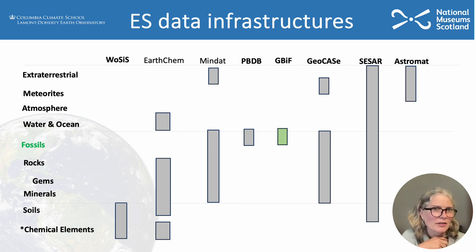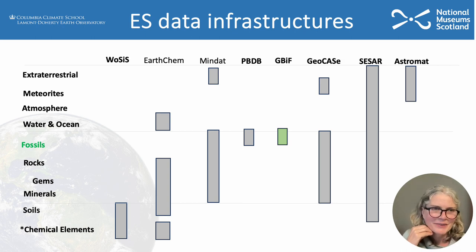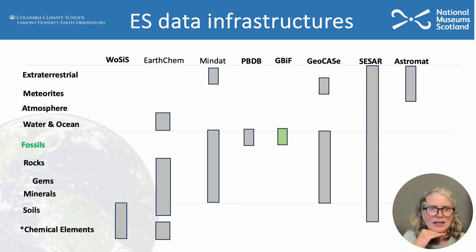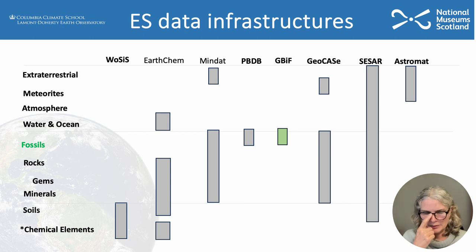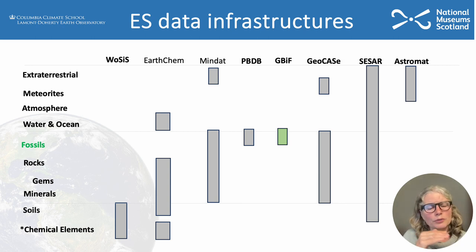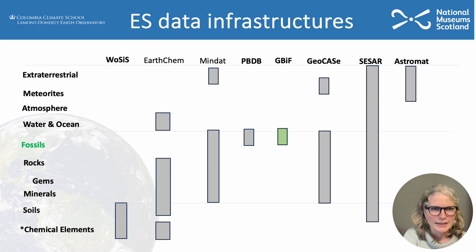I show here a range of data infrastructures along the top. In bold are data infrastructures that have specimens associated with them, and along the left-hand side is what the specimens are. You can see I've even got GBIF here, which has fossil data in it, but it doesn't represent any of the other sub-collections as far as I'm aware. So now we're going to move on to looking at some of these data infrastructures in a bit more detail.